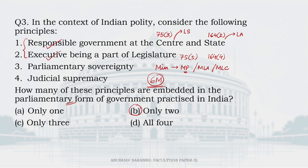As far as parliamentary sovereignty is concerned, in India parliamentary sovereignty is limited, especially with respect to the constitution and concepts like the basic structure doctrine. As far as judicial supremacy is concerned, countries like the UK which do have a parliamentary form of government do not have a concept of judicial supremacy — they primarily have parliamentary supremacy. So, principles three and four are both incorrect.